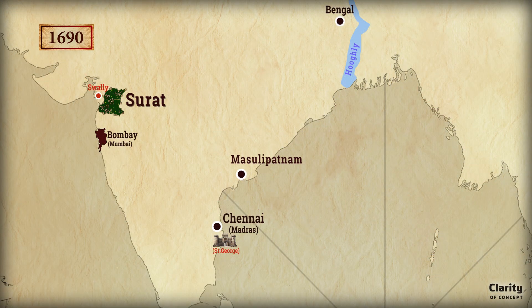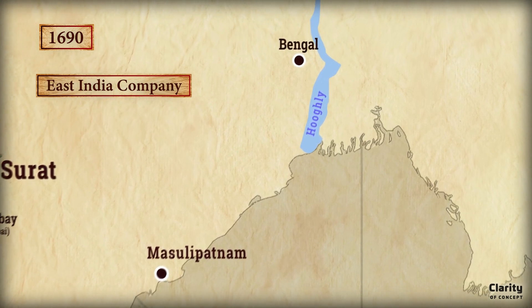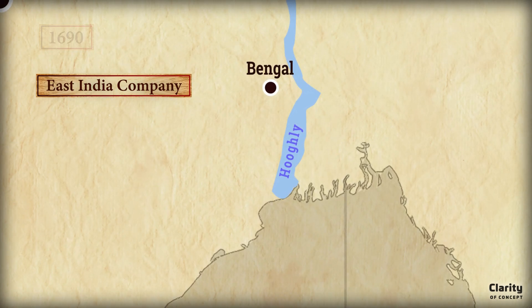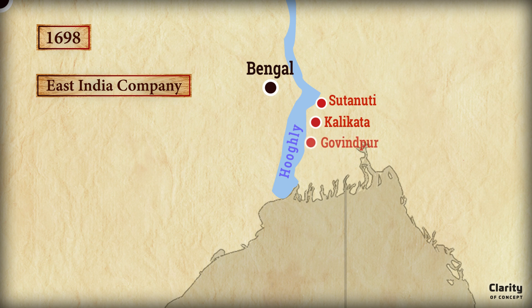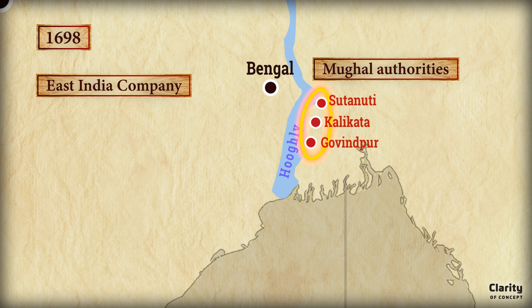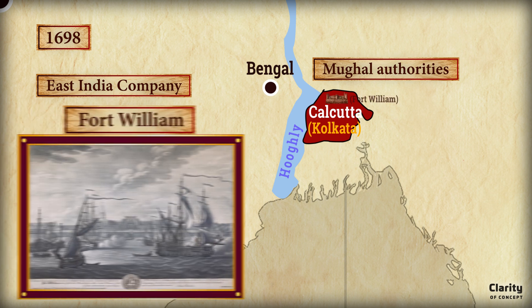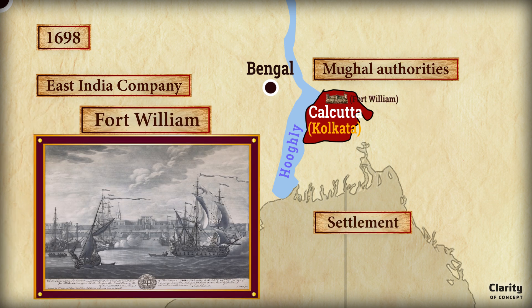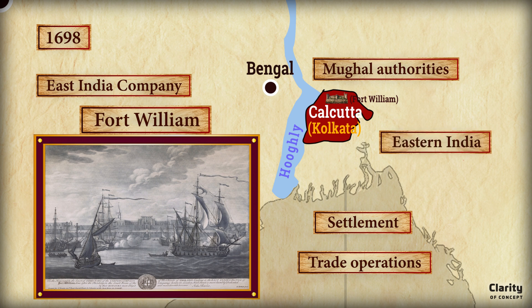In 1690, after resolving conflicts with the Mughal Empire, the English East India Company re-established itself in Bengal. By 1698, the company officially acquired three villages — Sutanuti, Kalikata, and Govindpur — from local Mughal authorities. These villages were combined to form what would become Calcutta, now called Kolkata. The English then built Fort William to protect their settlement and growing trade operations, marking the beginning of Calcutta's rise as the company's major centre of power in Eastern India.